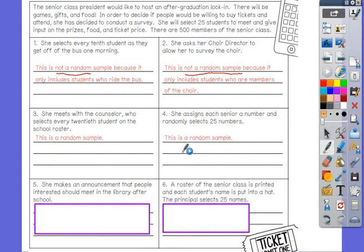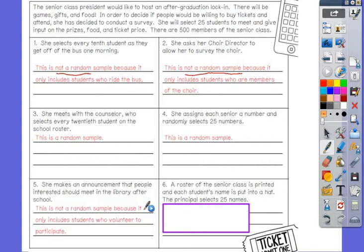Number five, she makes an announcement that people interested should meet in the library after school. That would be not random sampling because some people might have something else after school to do and they couldn't be able to attend like a sport. Not everybody was able to attend, so that's not a random sample.